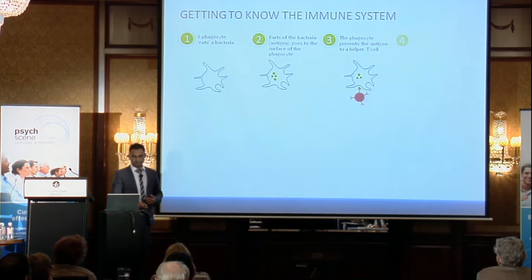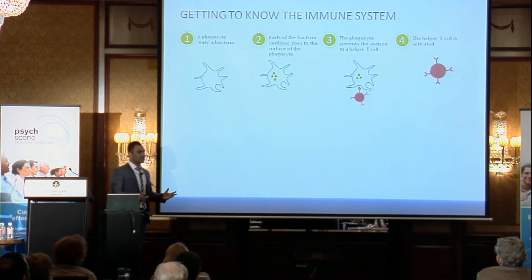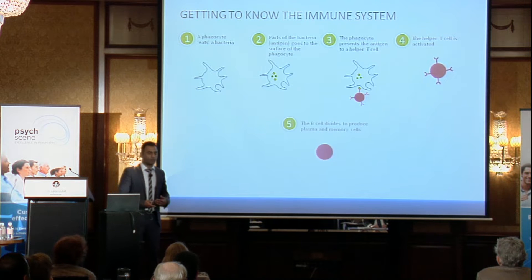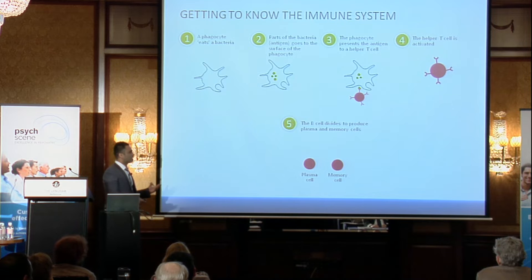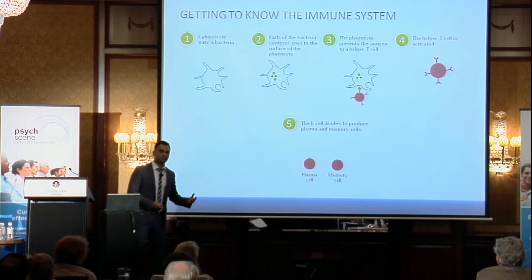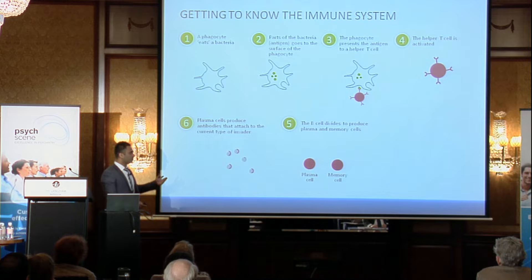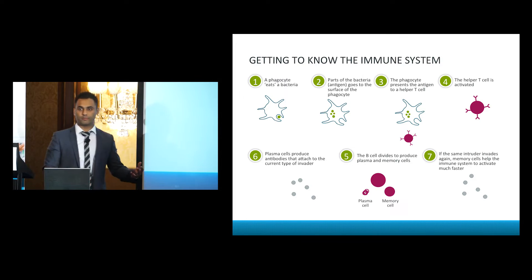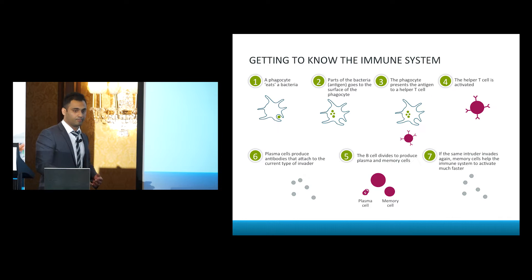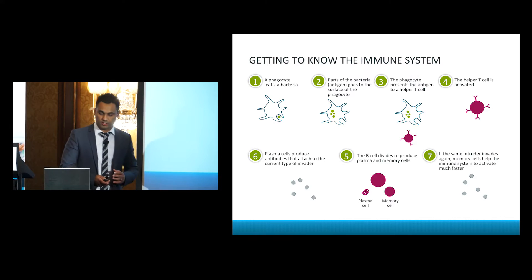It usually does this in the context of the MHC, the major histocompatibility complex. The T helper cell then gets activated and will bring in other B cells. B cells essentially divide into two types: the plasma cell, which produces antibodies, and the memory cell, which will recognize similar antigens in the future so it doesn't have to go through all these steps again. That's the basics of the immune system.